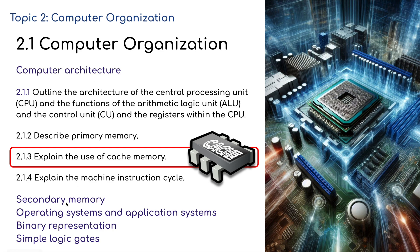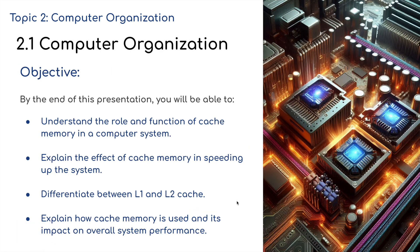We've still got to cover secondary memory, operating systems, binary, and simple logic gates. The objectives here are to understand the role and function of cache memory in a computer system, explain the effect of cache memory in speeding up the system, differentiate between level 1 and level 2 cache, and possibly look at level 3 cache, and explain how cache memory is used and its impact on overall system performance.